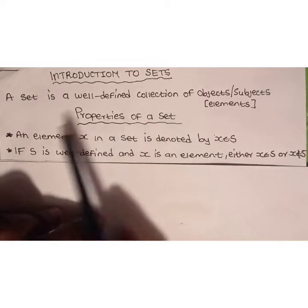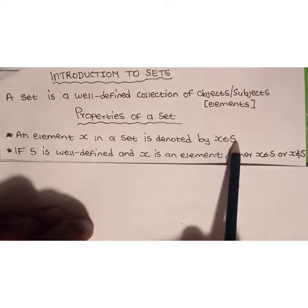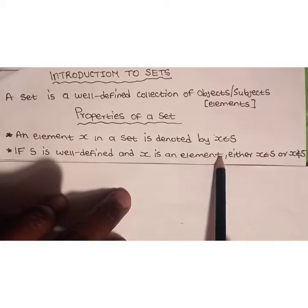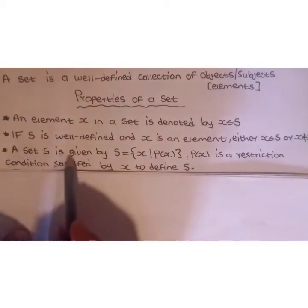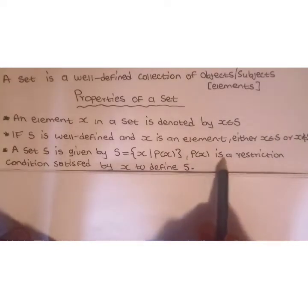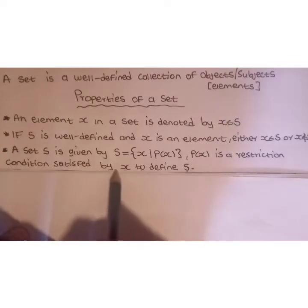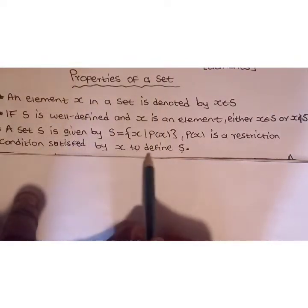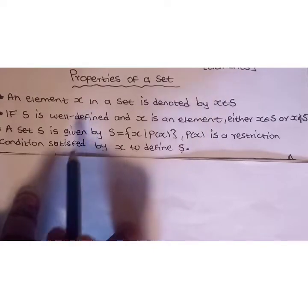Properties of a set. An element x in a set is denoted by x, an element of S, where S is a set. If S is well-defined and x is an element, either x is in S or x is not in S. A set S is given by a set containing an element x such that P(x), where P(x) is a restriction condition function that needs to be satisfied by x to define S. So every element x of S must satisfy P(x) for S to be a well-defined set.